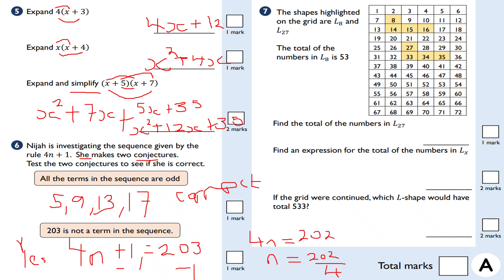Question seven: shapes highlighted on the grid — L8 and L27. The total of the numbers in L8 is 53. Find the total of the numbers in L27. Adding up the four numbers: 27 plus 33 plus 34 plus 35. Working through: 7+3+4+5=19, carry the 1; 2+3+3+3+1=12, carry the 1; giving a total of 149.